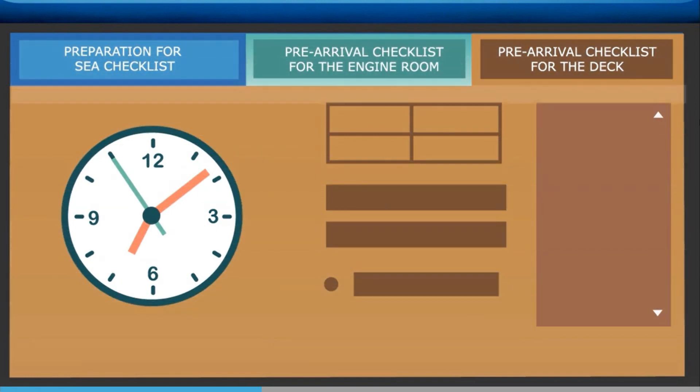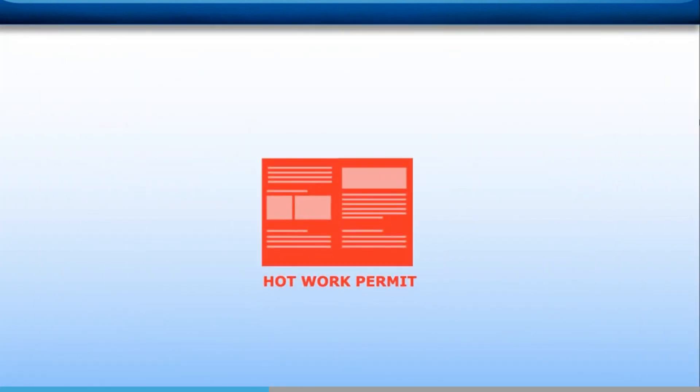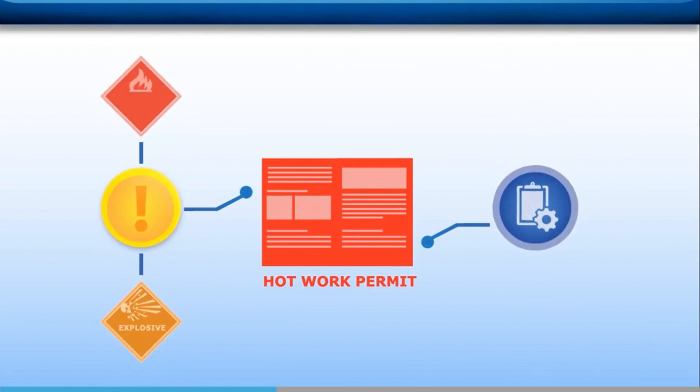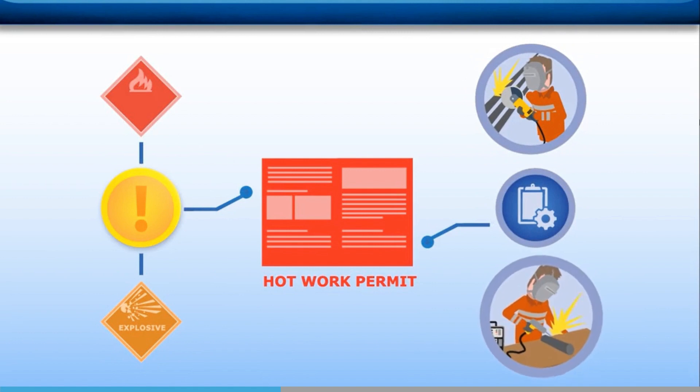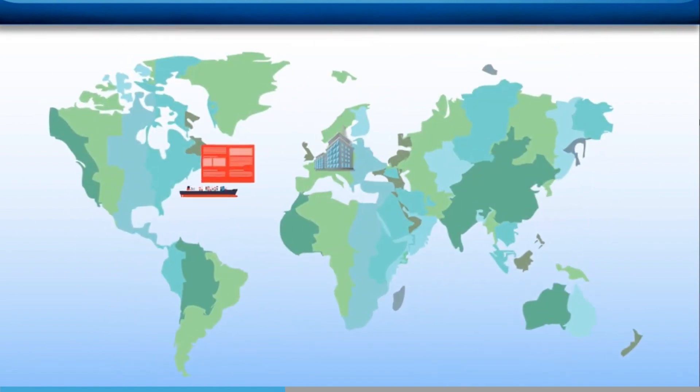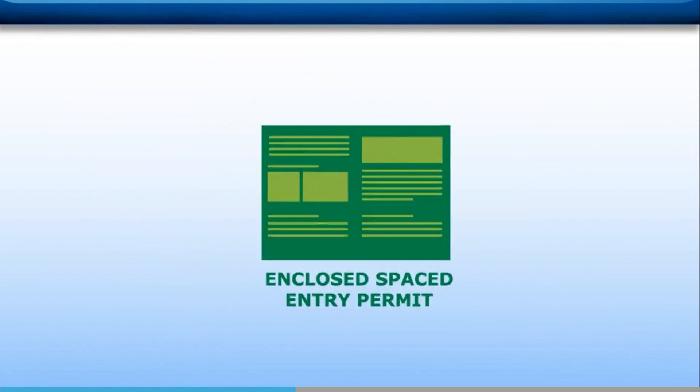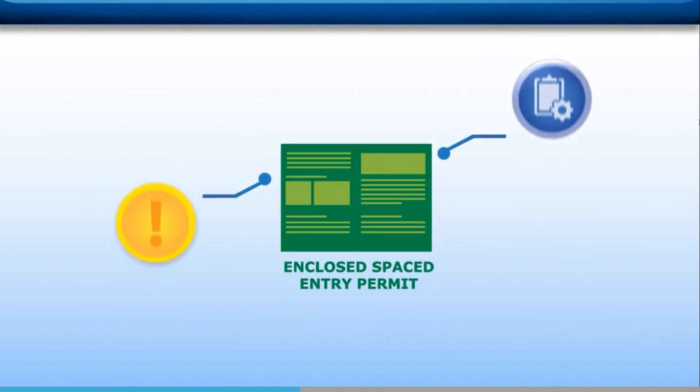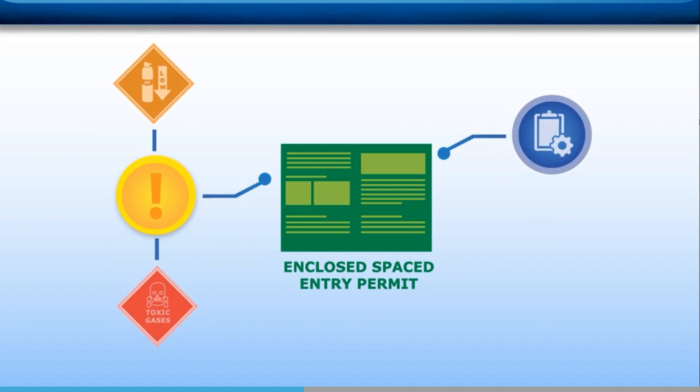Hot work permits should be issued when a task involves the risk of fire or explosions, which can be caused by such tasks as welding or grinding. You should be aware that some companies require hot work jobs to be reported to the office before being started. Enclosed space entry permits should be issued when there is a lack of oxygen or if there are dangerous gases present. Examples include tank inspections and entering cargo holds without forced ventilation.